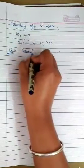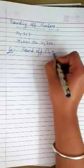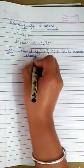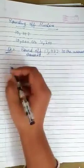Round off 17,437 to the nearest thousand. To round off this number, we follow some steps.